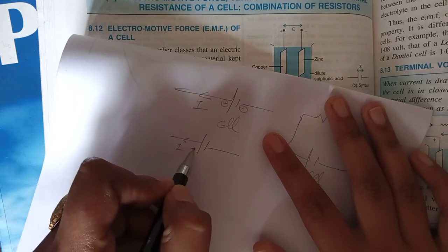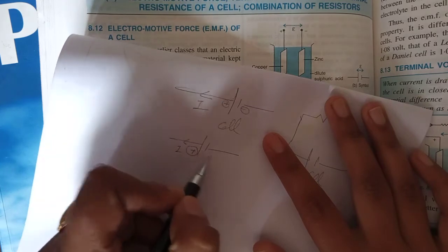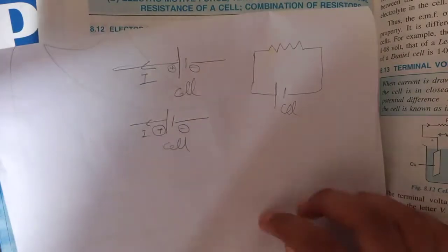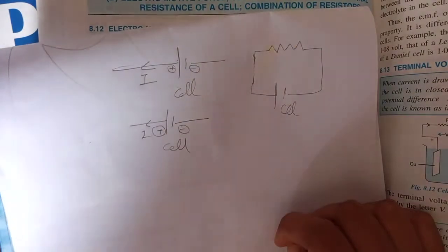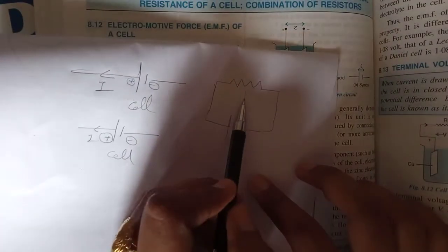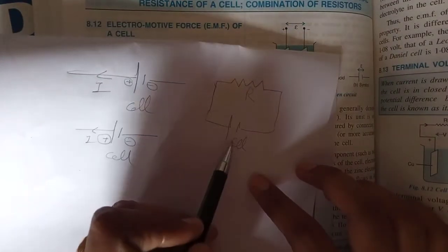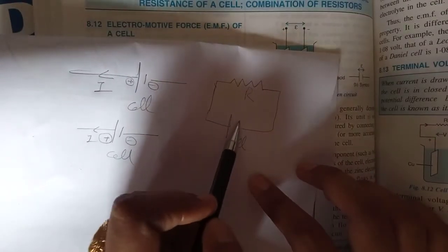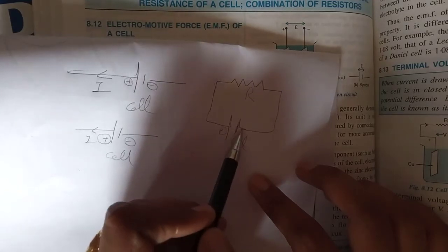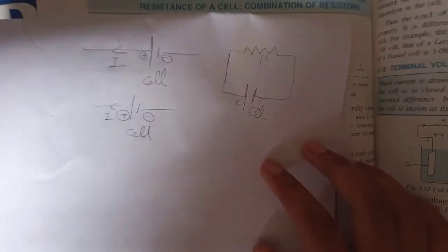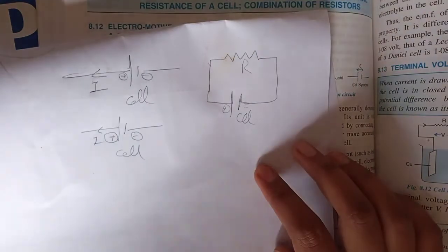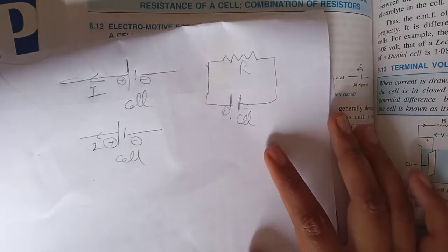This is a current flow. This is a positive part and this is a negative part. This is a resistance. This is a cell connected — positive part, negative part, current flow. Electrons move.